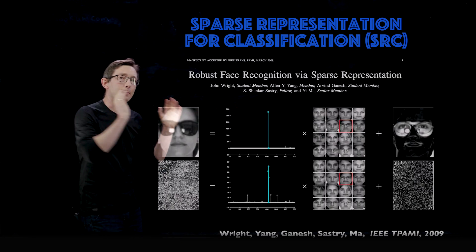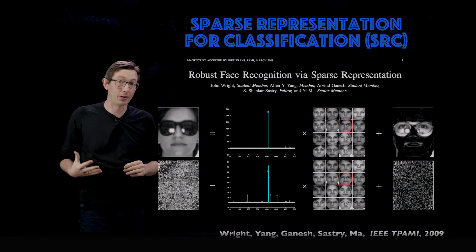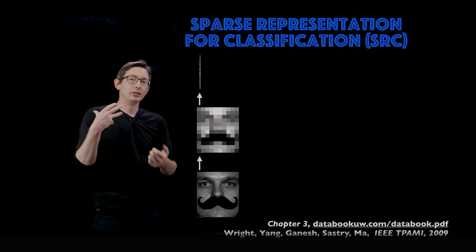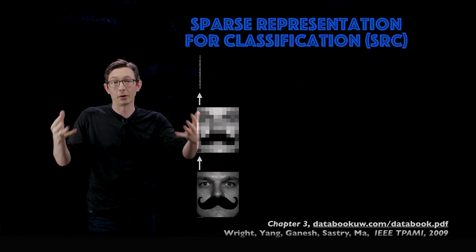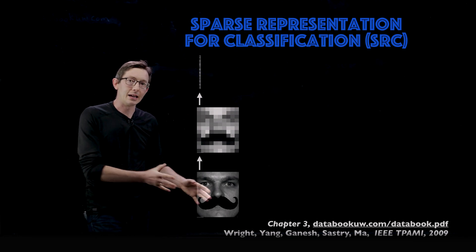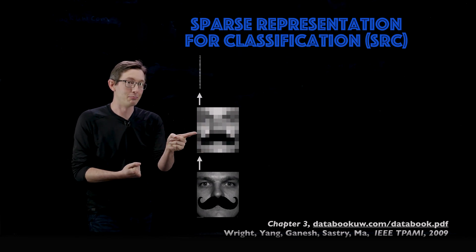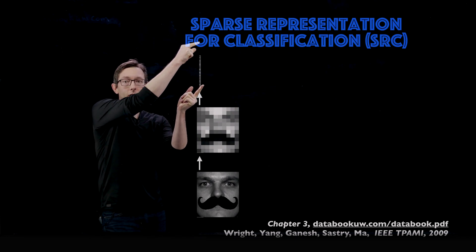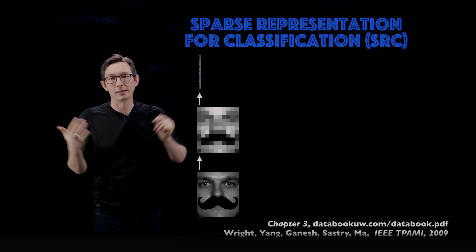So back to how this algorithm actually works. The basic idea leverages robust statistics and the fact that patterns exist in your data. You have a library of human face images, and you're going to use that along with sparsity to cross-reference these images. You take an image of a person, and the first thing you do is down-sample it to a really coarse version — you can barely tell who the person is — then stack that as a tall skinny vector.